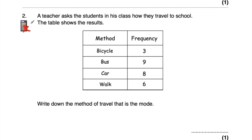Question number two. A teacher asks the students in his class how they travel to school, and the table shows the results. We've got bicycle, bus, car and walk. The question says, write down the method of travel that is the mode — the one with the highest frequency. Three people travel by bicycle, nine by bus, eight by car and six walk. Nine by bus is the highest frequency, so bus is the mode.